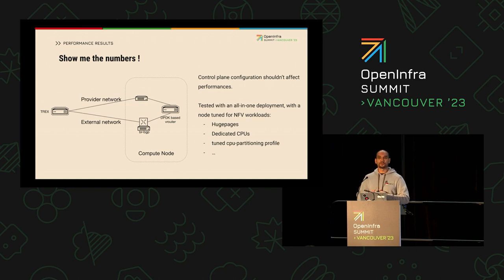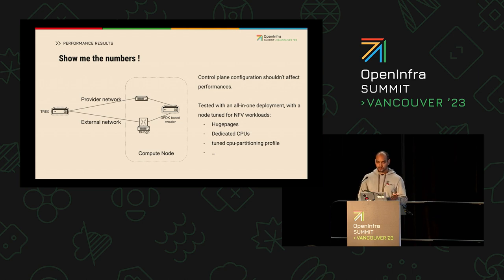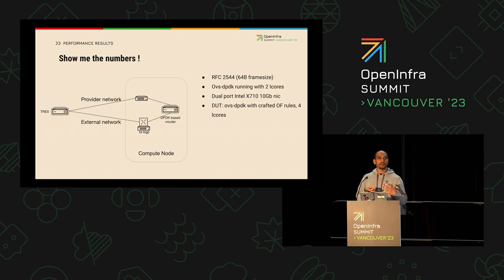Everything is configured in a standard NFV configuration — with huge pages, dedicated CPUs — and we have proper isolation with TuneD and the CPU partitioning profile, both on the hypervisor and within the guest. The only thing we modified is whether we deployed with the second OVN cluster or without it — either with the kernel data path or with the DPDK data path. The traffic type injected is fairly similar to RFC 2544: 64-byte frame size, which is really small but is the standard kind of test. We also have multiple static routes, but nothing fancy.